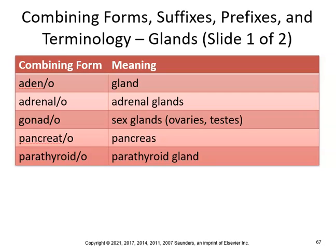Now we can go into combining forms, suffixes, and prefixes. The whole purpose of medical terminology is being able to put two words together and understand the meaning. If you know prefixes and suffixes, you should be able to figure out what a word means. So adeno means gland — adenoectomy means removal of a gland. Adrenal means the adrenal gland, so adrenalectomy is removal of an adrenal gland. Gonadal refers to the sex glands — ovaries and testes — so gonadotropin is a hormone secreted from the pituitary gland that acts on the gonads.